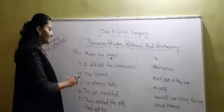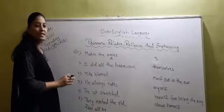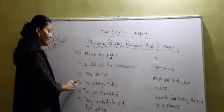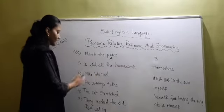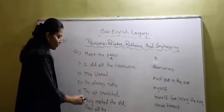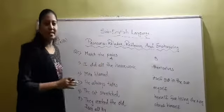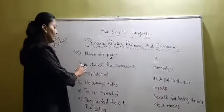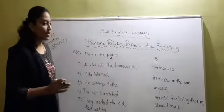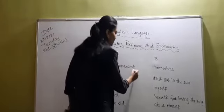I am reading the first side. The first sentence is: I did all the housework. I did all the housework — that means I did all the work by myself. So we have to match this sentence with 'myself'.